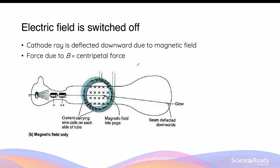In the third part of Thomson's experiment, the electric field that was switched on is now turned off. Now in the absence of the electric field, the cathode ray only experiences the force due to the magnetic field, and as a result it is deflected downward. So the position of the cathode ray on the screen is now below the original position where it had travelled in a straight line. When only the magnetic field is present, the cathode ray undergoes uniform circular motion, whereby the force due to the magnetic field provides the centripetal force.